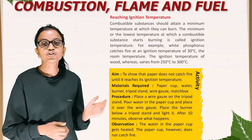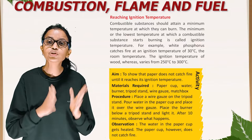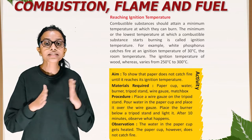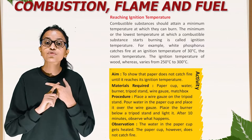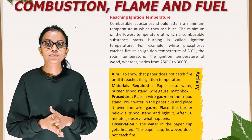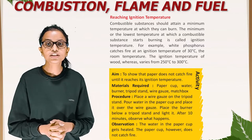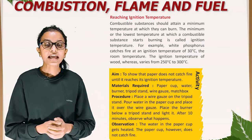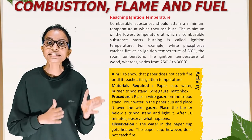Reaching ignition temperature. Combustible substances should attain a minimum temperature at which they can burn. The minimum or lowest temperature at which a combustible substance starts burning is called ignition temperature. For example, white phosphorus catches fire at an ignition temperature of 30 degrees Celsius, which is the room temperature. The ignition temperature of wood varies from 250 to 300 degrees Celsius. Activity: The aim of this activity is to show that paper does not catch fire until it reaches its ignition temperature.